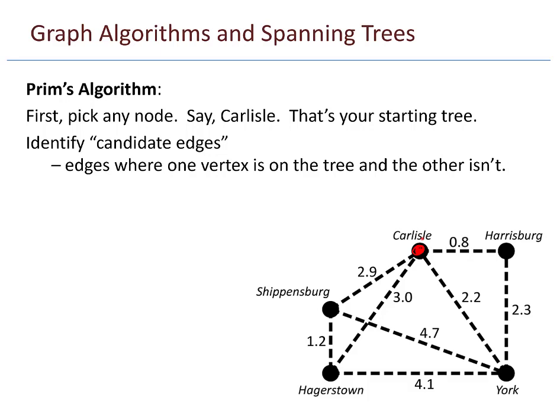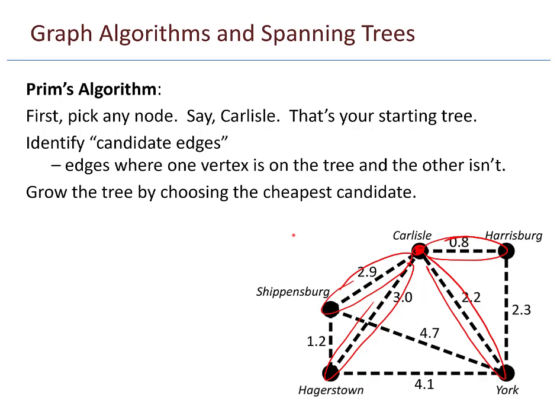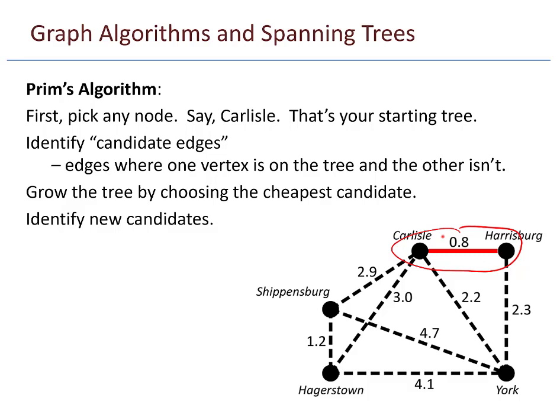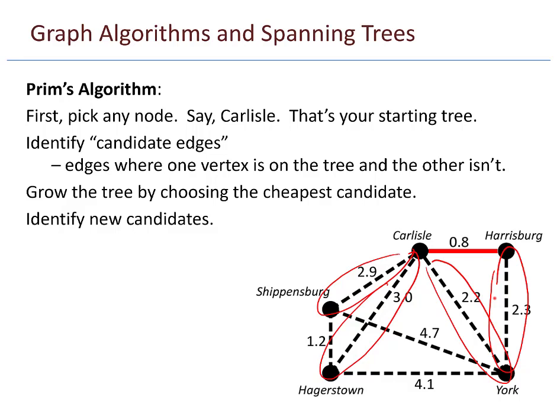Now I identify candidate edges — these are edges where one vertex is on the tree and the other isn't. It looks like I have four different candidate edges. Now I grow the tree by choosing the cheapest candidate. Among these four choices, the one from Carlisle to Harrisburg is the cheapest. We include that edge. Now my tree consists of one edge, so I look at all possible edges connecting to that — four candidates to grow the tree.